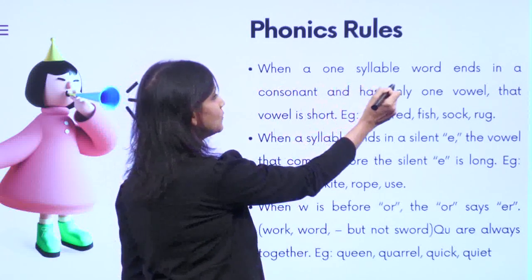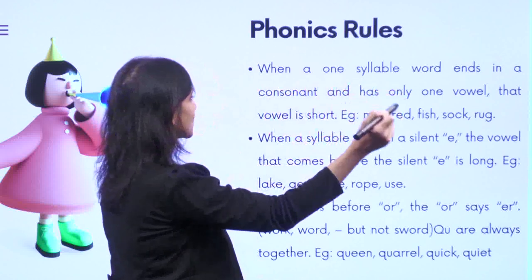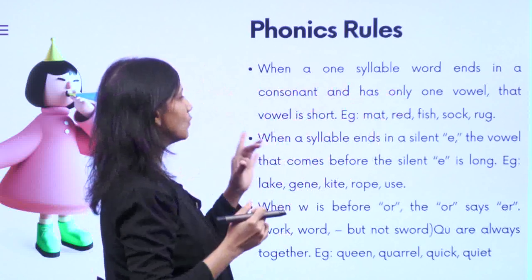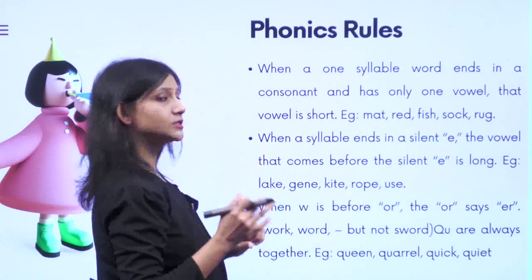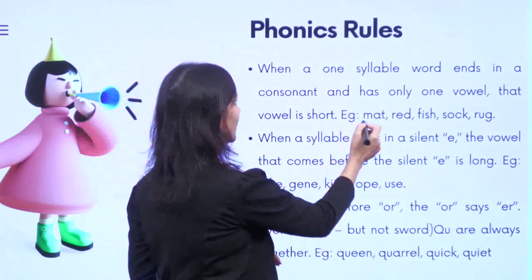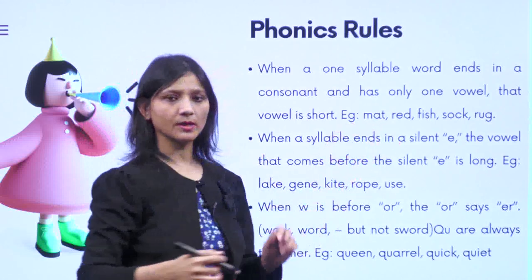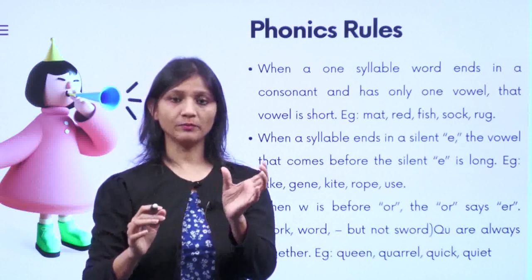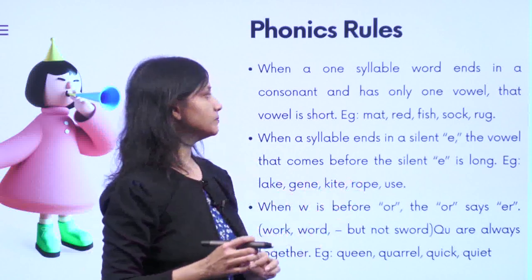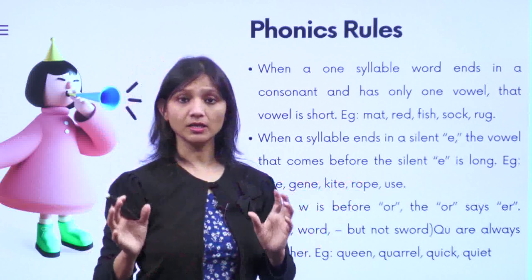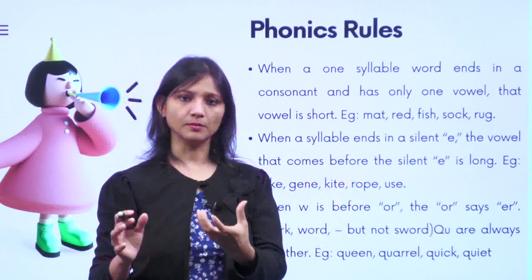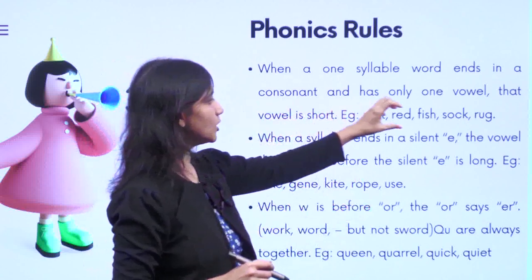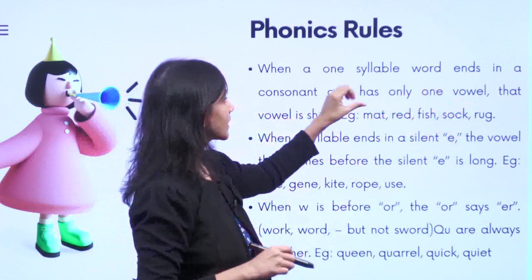Rule one: when a one-syllable word ends in a consonant and has only one vowel, that vowel is short. What is a one-syllable word? For example: mat, cat. These are one syllable, meaning the word itself is one unit — you will not break it and read. You cannot say 'ma' and then 'T' — 'ma' and 'T' do not form any syllable. 'Mat' is a syllable, one whole word. So: mat, red, fish.